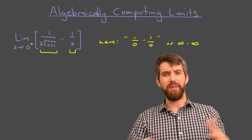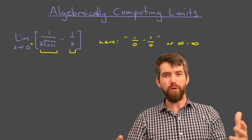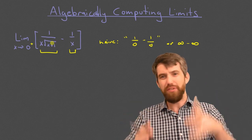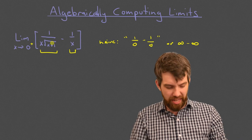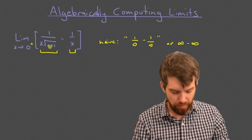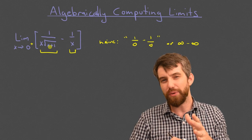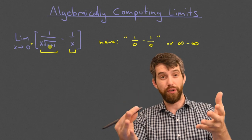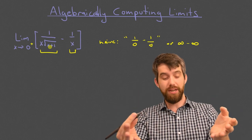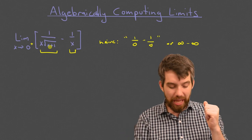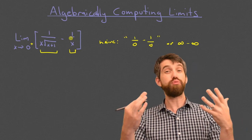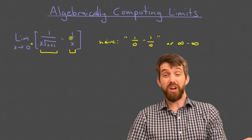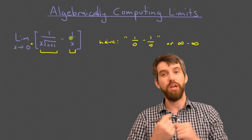When trying to solve something algebraically, the challenge is figuring out which algebraic tricks to use. I notice there are some square roots and a difference of fractions — there are a few different things I could do. What comes to mind first is that because this really is a difference of fractions, we should probably find a lowest common denominator. So let's try that and see whether it's useful.